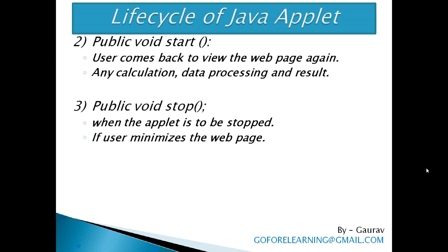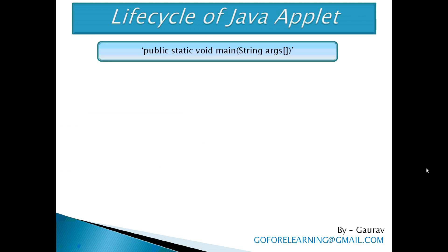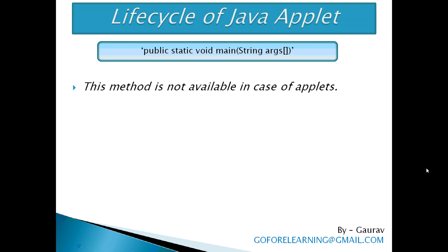The third method is public void stop. This method is called by the browser when the applet is to be stopped. If the user minimizes the web page, then this method is called. The fourth one is public void destroy. This method is called when the applet is being terminated from the memory. The stop method will always be called before destroy.